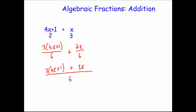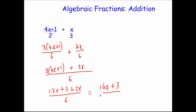Now we just need to expand our brackets on the numerator and then simplify. 3 times 4x is 12x, and 3 times 1 is 3, plus 2x, all over 6. Simplifying the numerator: 12x plus 2x is 14x, plus 3, all divided by 6. This can't be simplified, so our answer is (14x + 3) over 6.